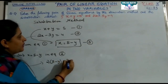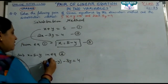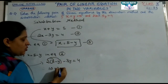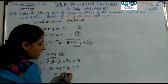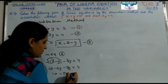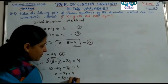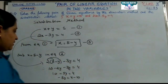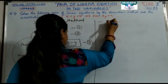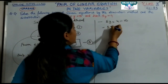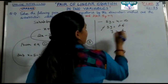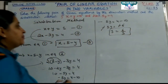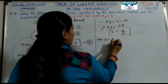Now using the substitution method: from equation one, x plus y equals 5, so x equals 5 minus y. Substituting into equation two: 2 times (5 minus y) minus 3y equals 4. That gives 10 minus 2y minus 3y equals 4, which is 10 minus 5y equals 4. So minus 5y equals 4 minus 10, giving minus 5y equals minus 6, and y equals 6 by 5.